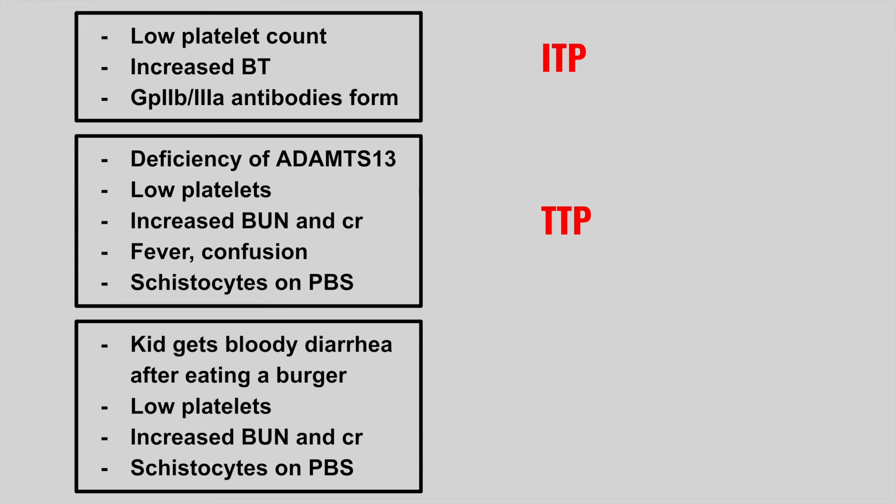Next, we have a kid who gets bloody diarrhea after eating a burger, with low platelets, increased BUN and creatinine, and schistocytes. This is HUS, and remember it's caused by a specific E. coli strain.